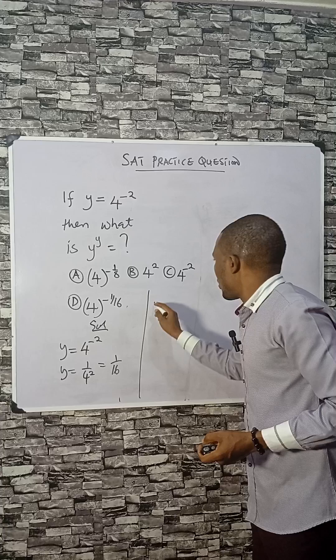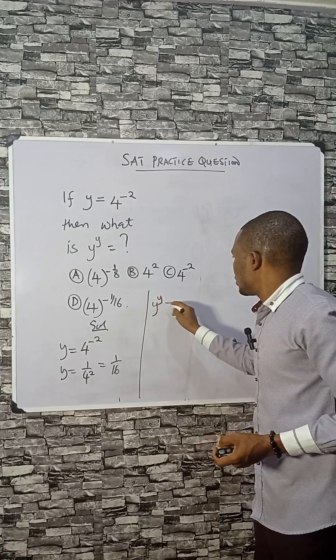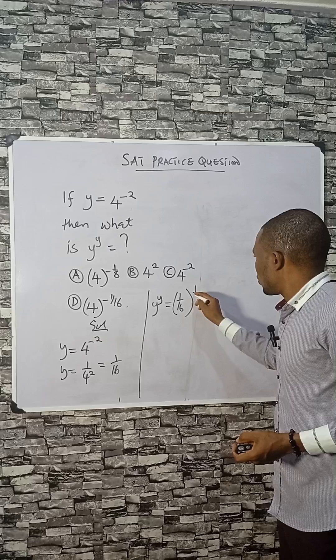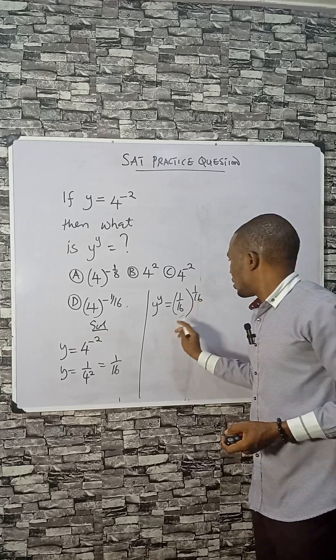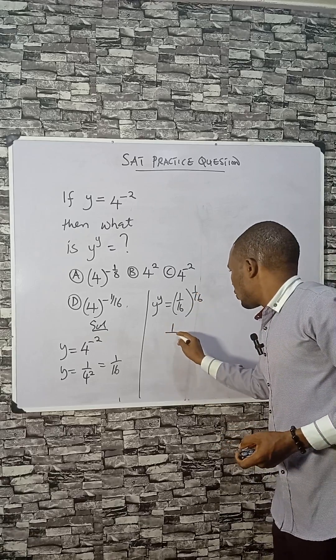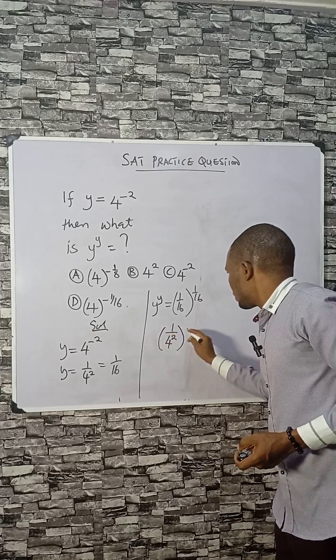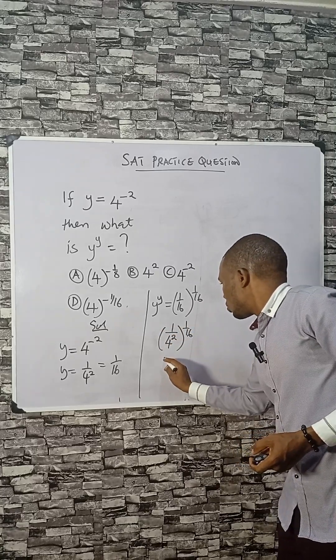So our y raised to the power y now is 1 over 16 raised to the power of 1 over 16. Let's work here. 1 over 16 can be written as 4 raised to the power of minus 2.